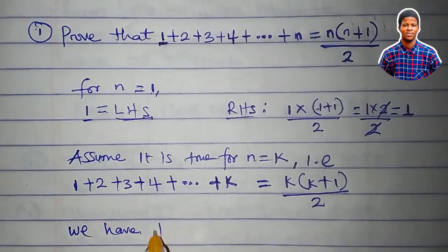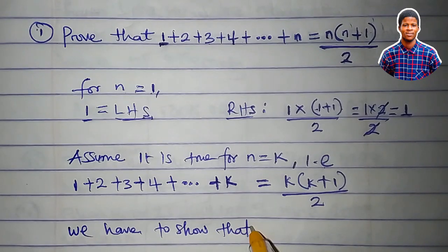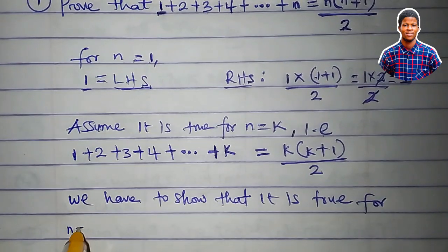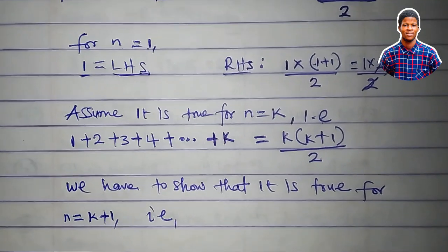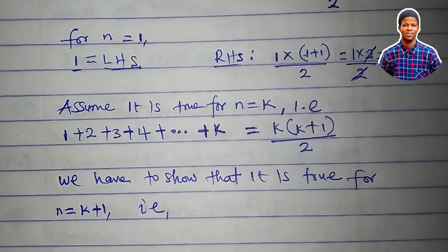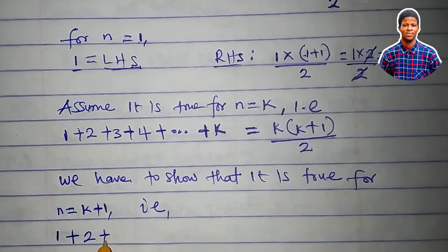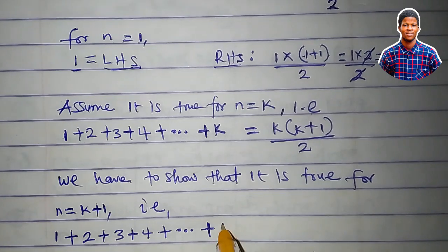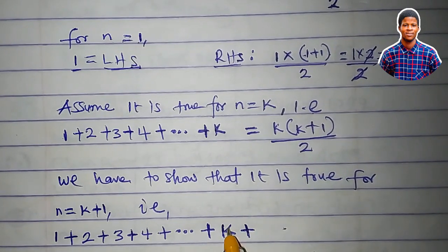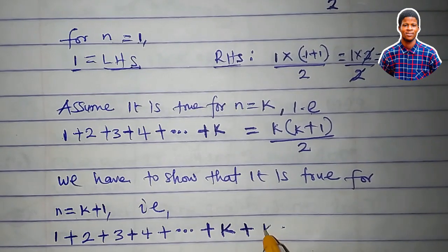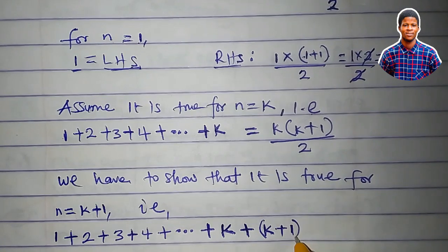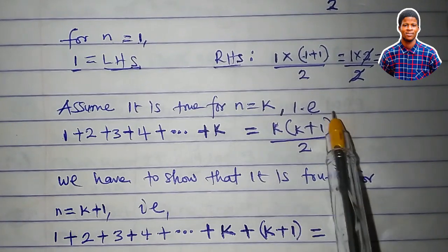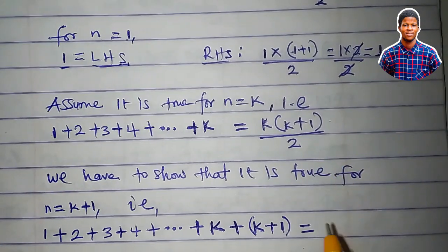We will now show that it is true for n equal to k plus 1. This is where we have to be very focused. We write 1 plus 2 plus 3 plus 4 plus... To get the next term after k, we write k as a function of k plus 1, that is k plus 1. This function here is a function of k, and I want to make it a function of k plus 1.